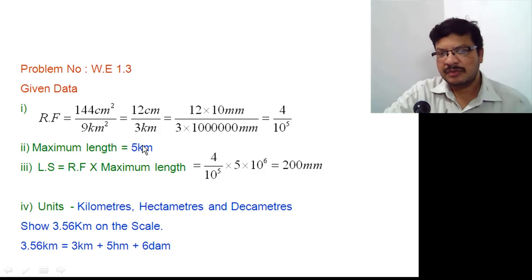And maximum length given in the problem is 5 km. From RF and maximum length, the length of the scale is obtained as 200 mm. The units that are to be represented on this scale are km, hectometers and decameters. Here 3 units are given. So diagonal scale can be used to represent all these 3 given units.